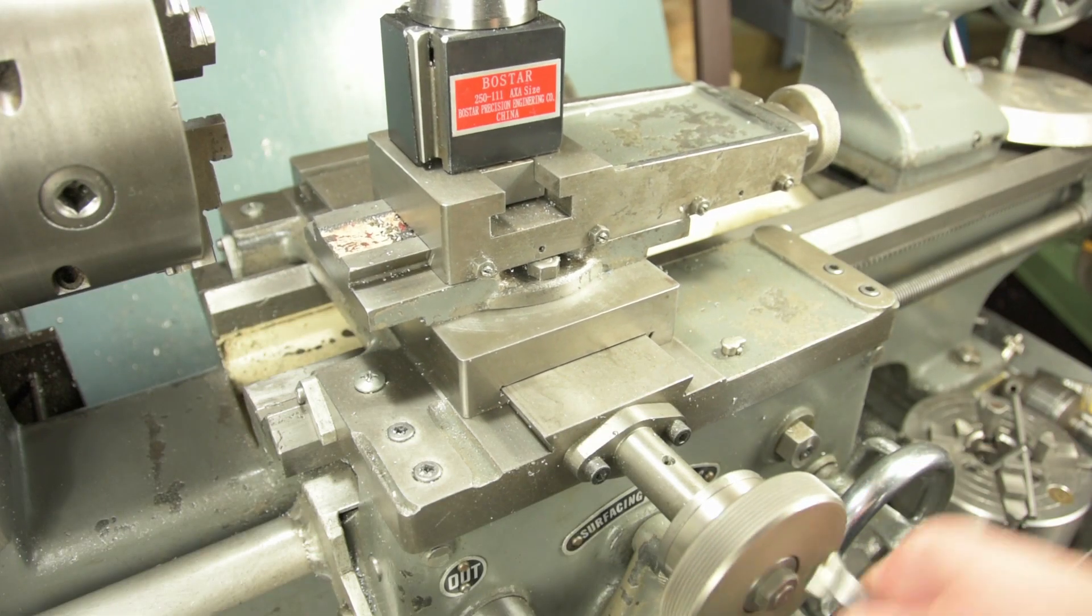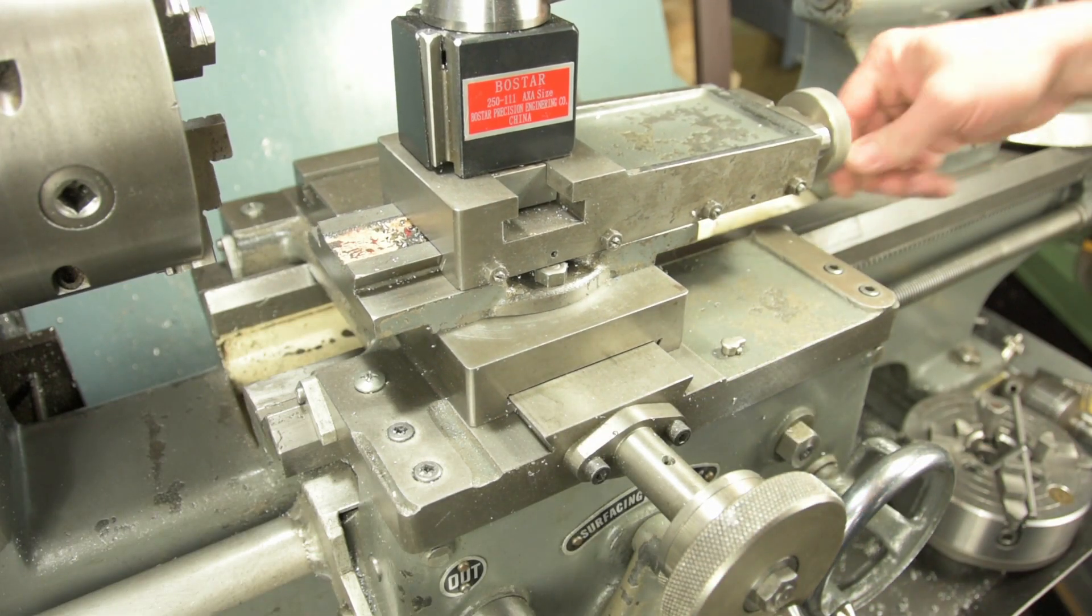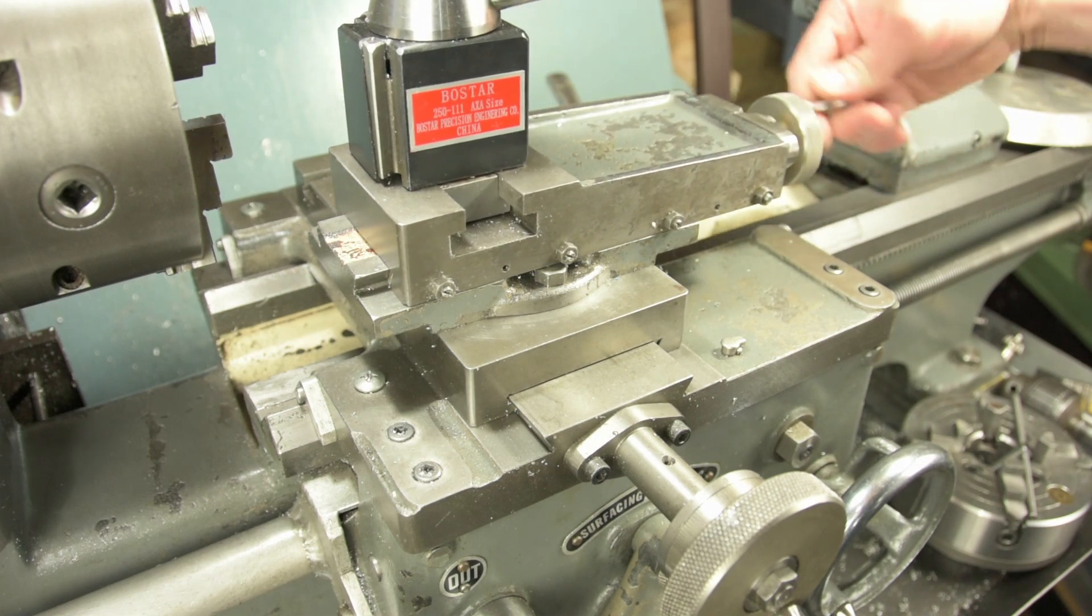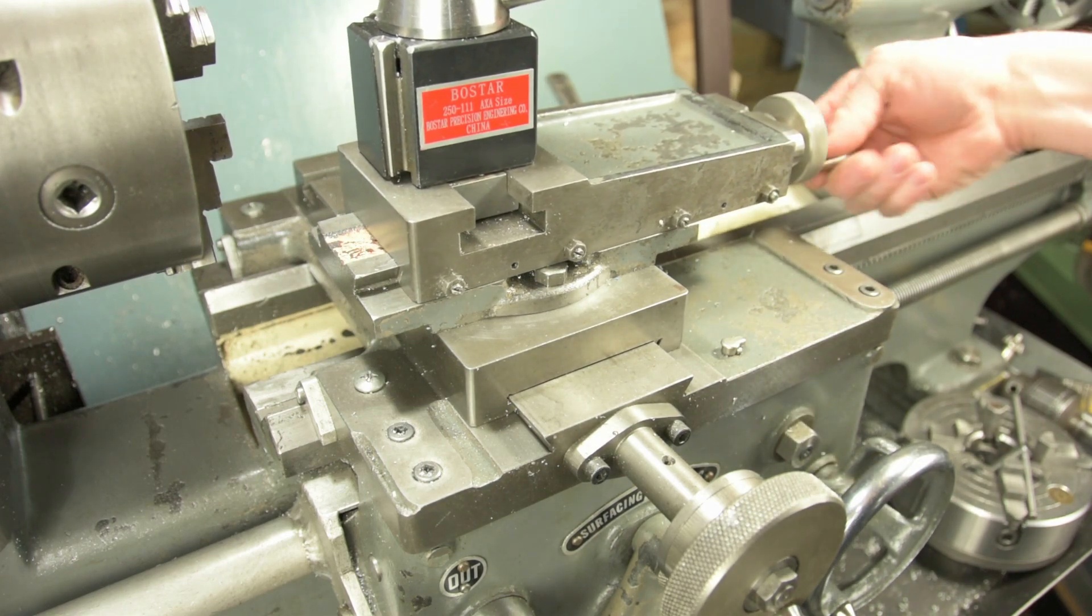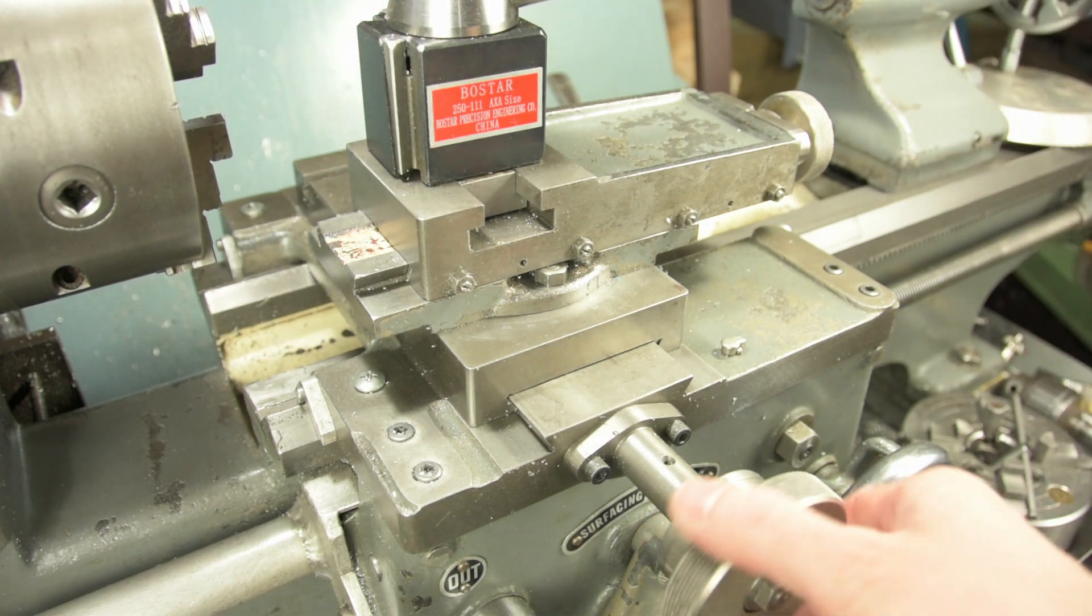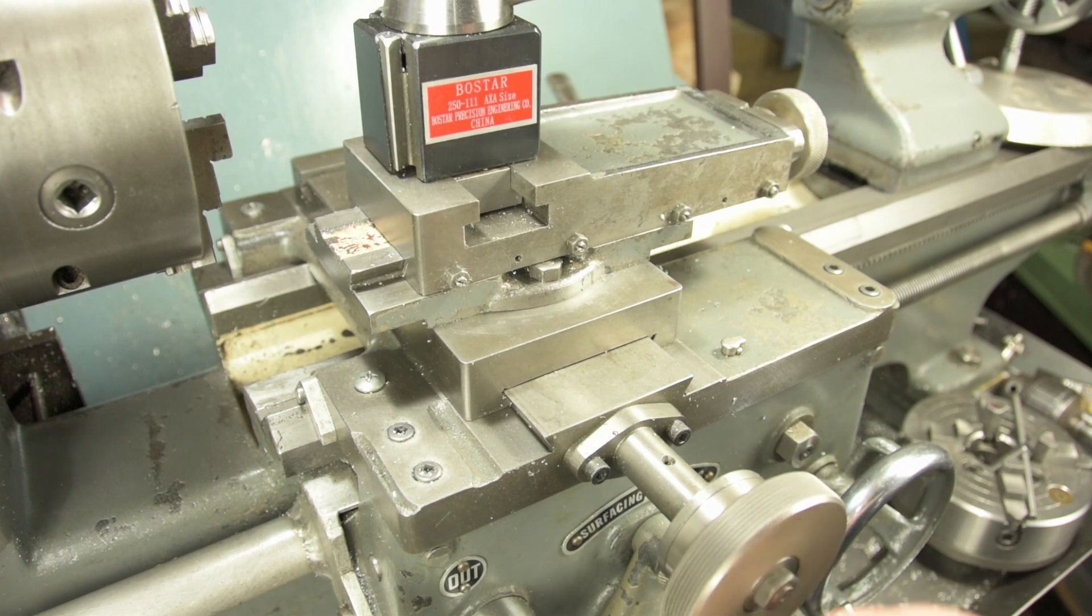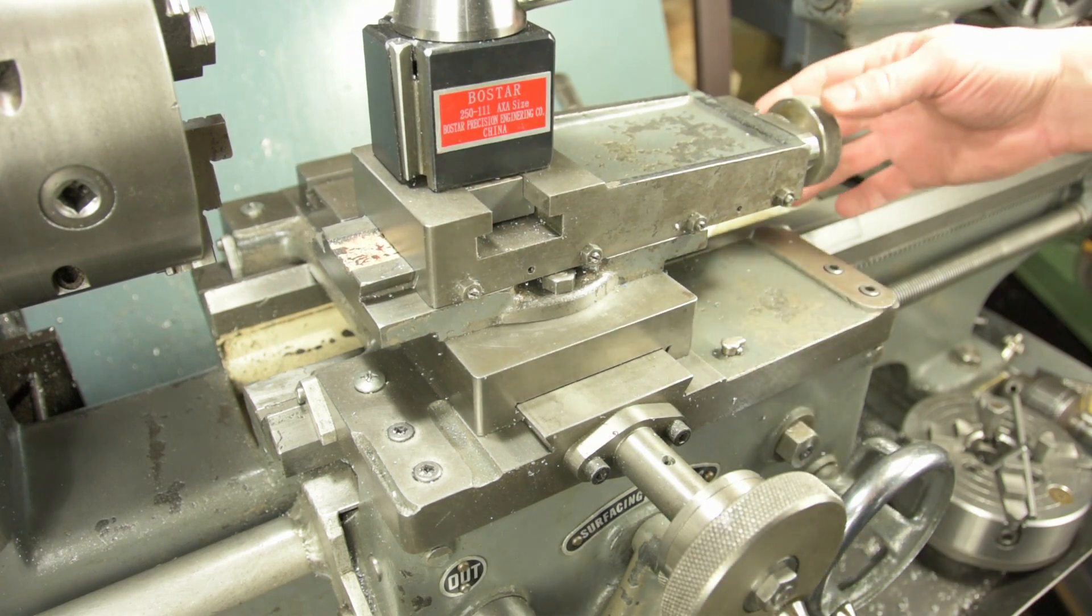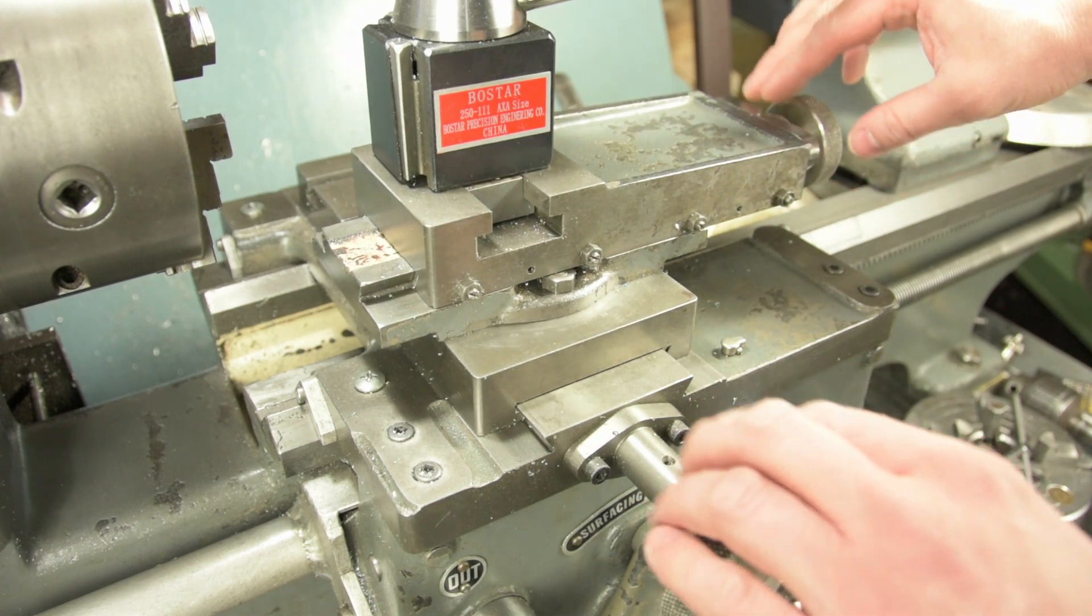Now this is the cross slide and compound slide, or top slide, on my metalworking lathe. Normally if you're trying to reduce the diameter of a rod that's being turned up here, you put on a small cut at a time with the cross slide. But these numbers are written in imperial.